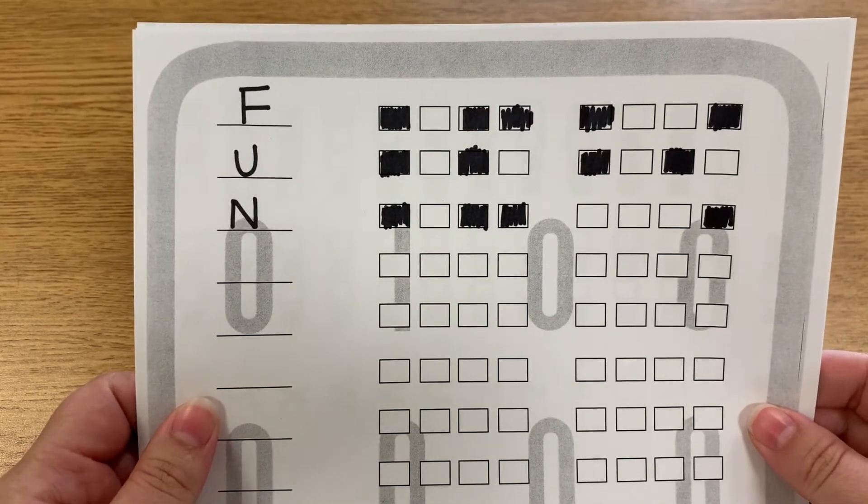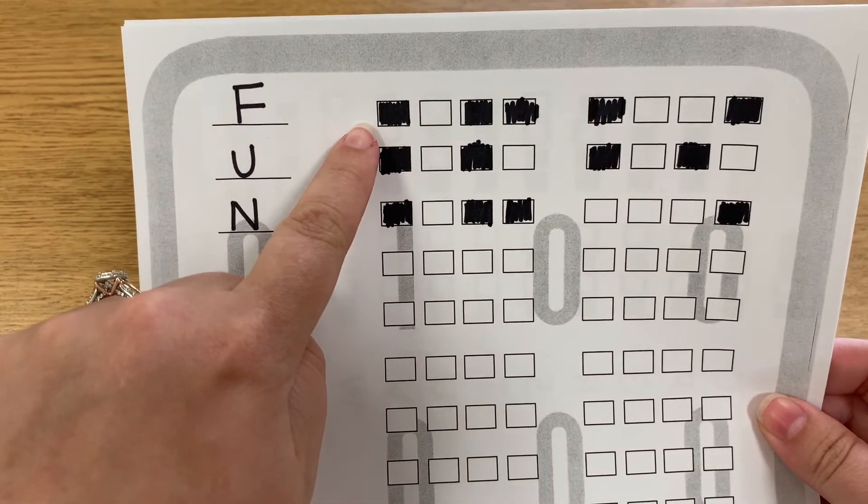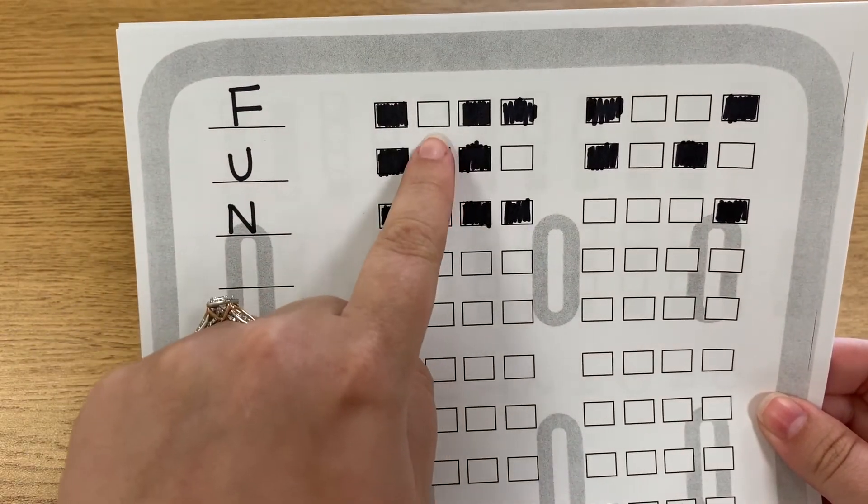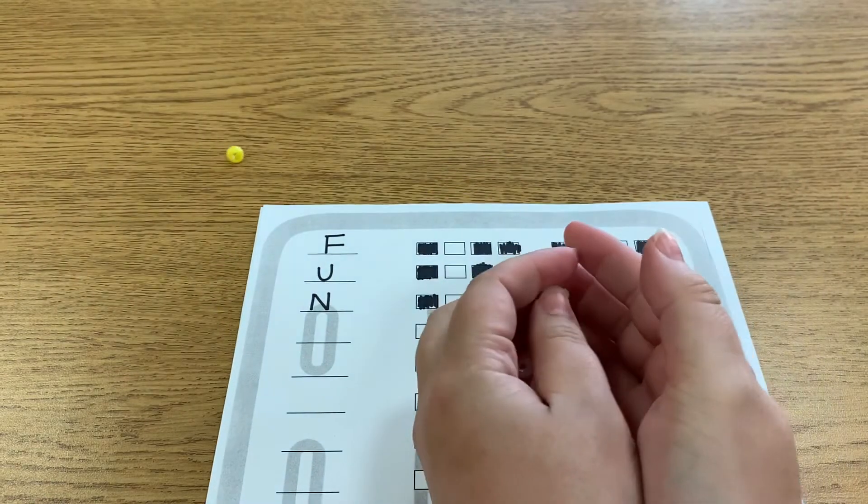Now that the pattern is filled in, I need to choose two different colored beads. One will represent the black, and the other one will represent the white. For this one, I have chosen the colors yellow and white.